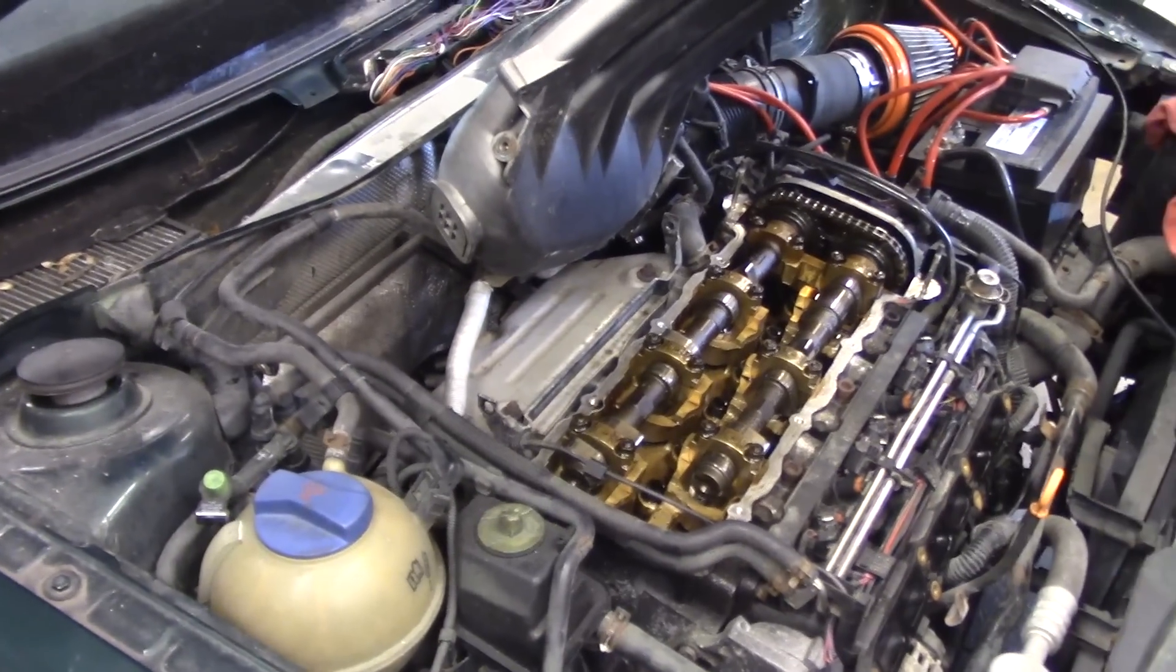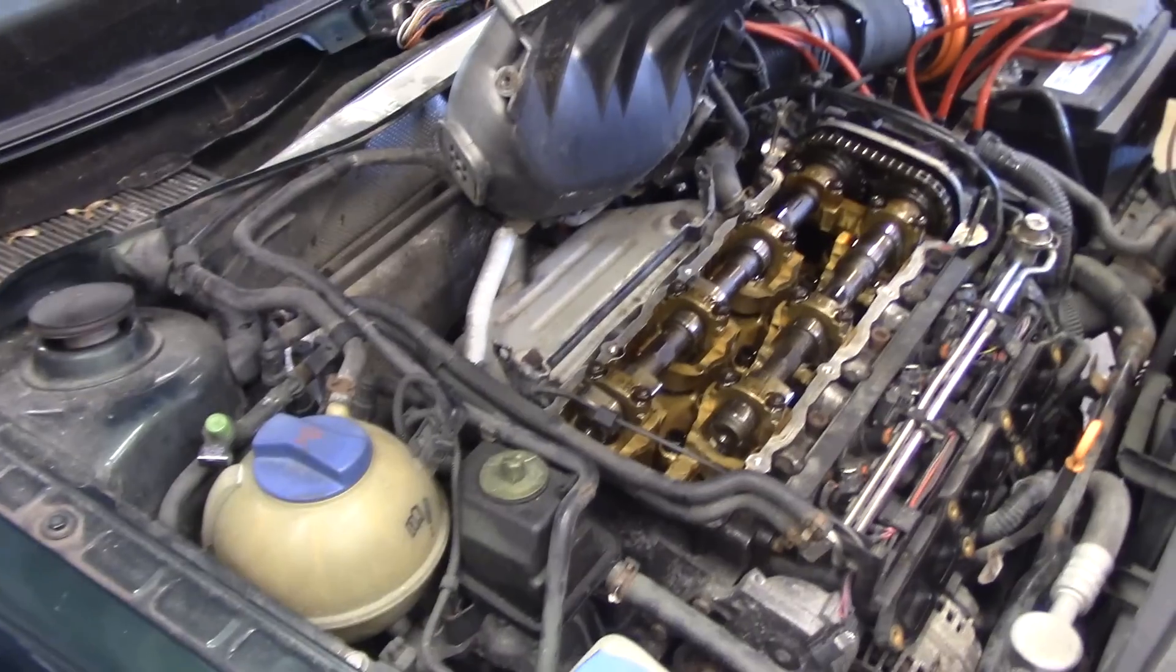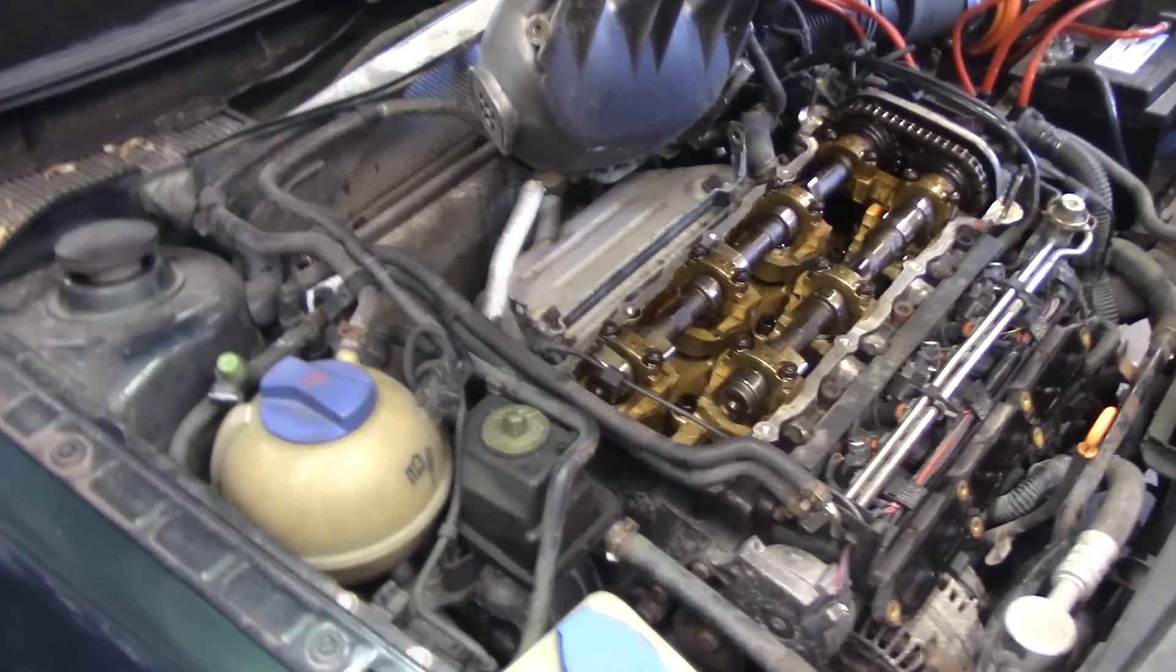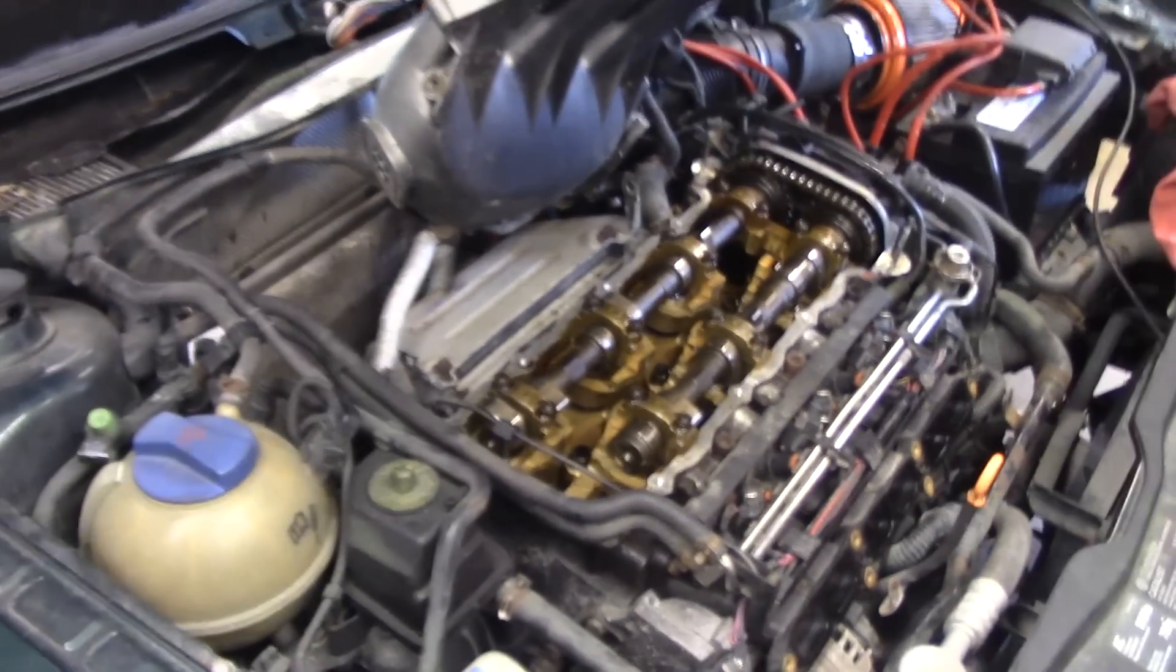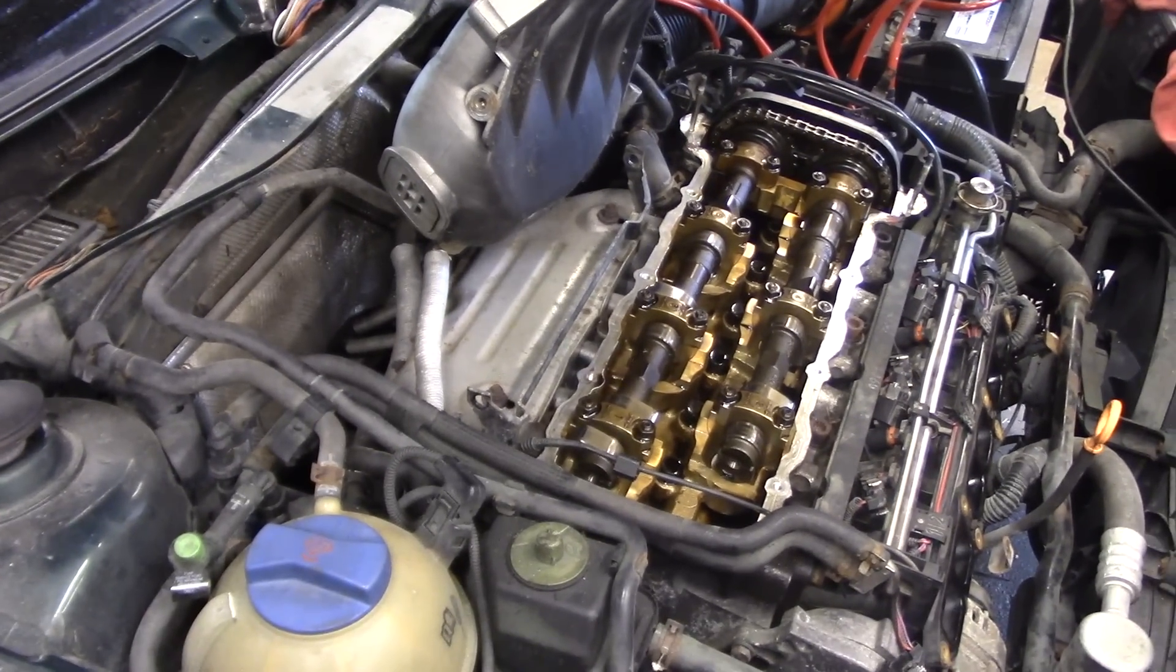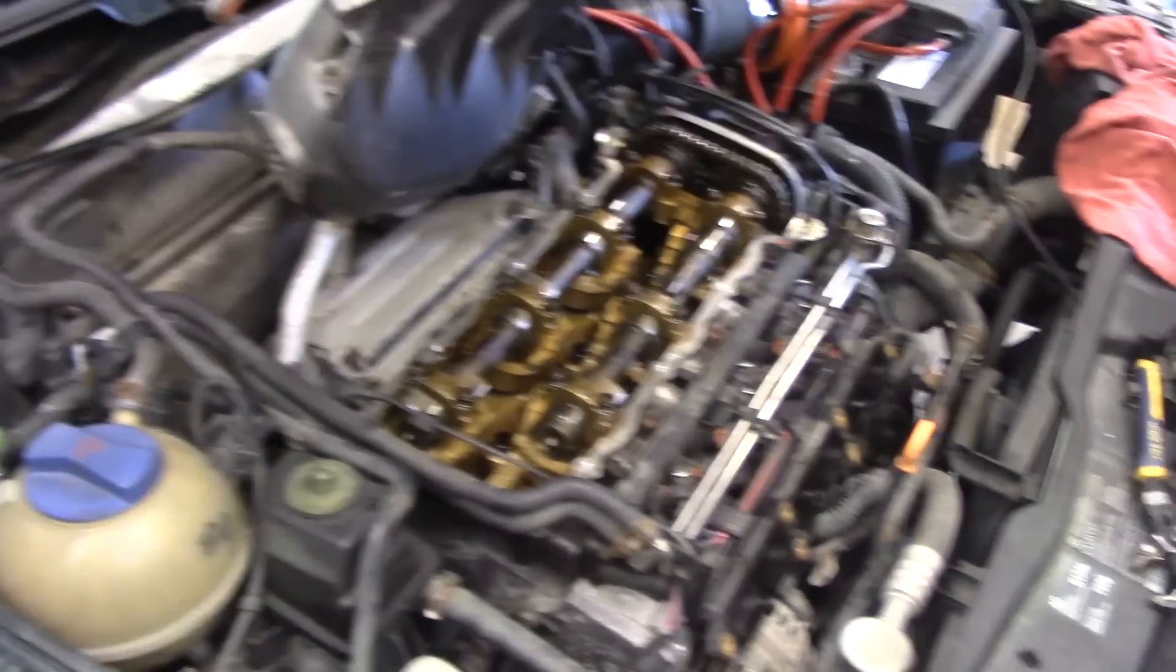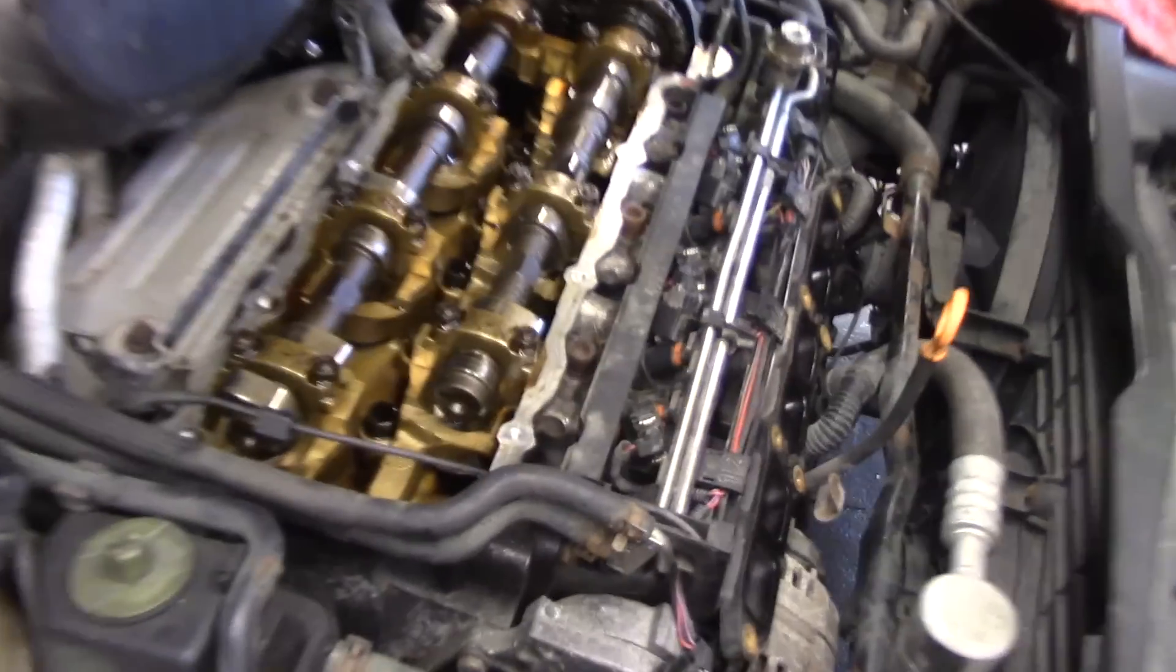All right, so we're back on Tony's Jetta. It's a 2002 VR6. Right now we are chasing the P0340 cam sensor fault. And based on our cam crank waveform, what it looked like is that the timing was out. So we had Tony pull off the valve cover. And right now what we have, I'll get our setup down here.